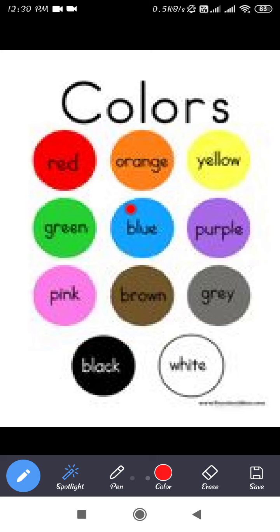The next circle is blue color. The spelling of blue is B L U E — blue. Next is purple color. The spelling of purple is P U R P L E — purple.